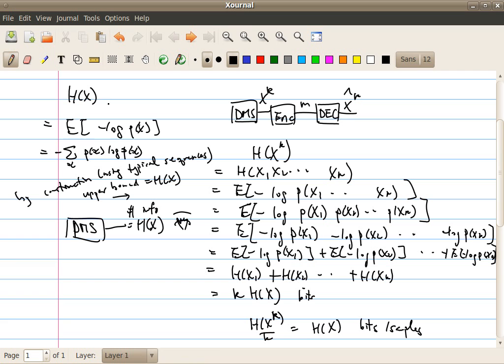So therefore, we can really imagine that the amount of information of the source is at least H(x) bits per sample. Therefore, we really built a lower bound there also, like last time.